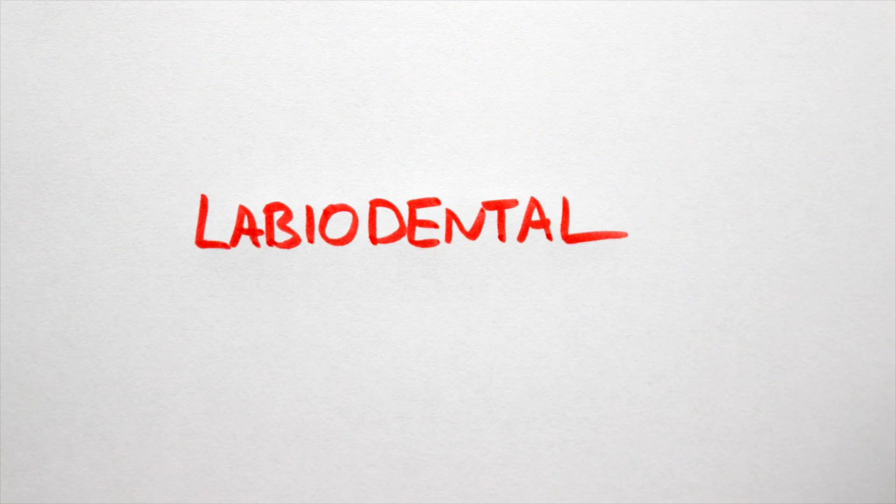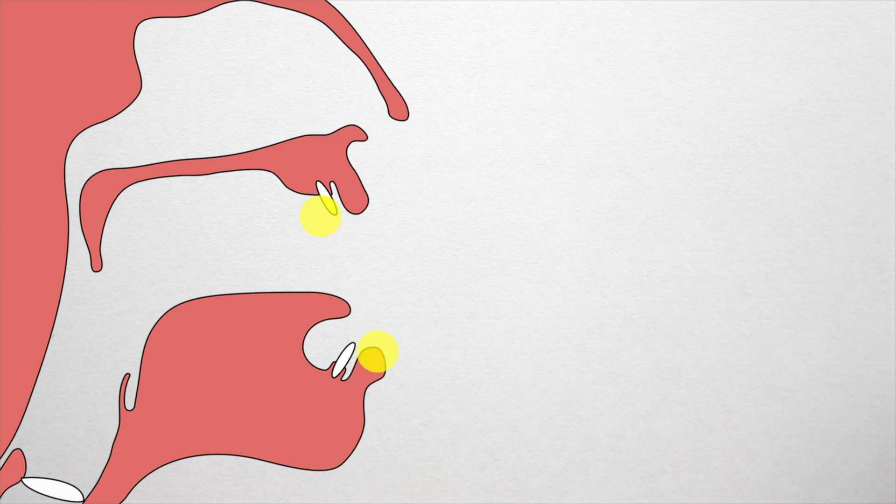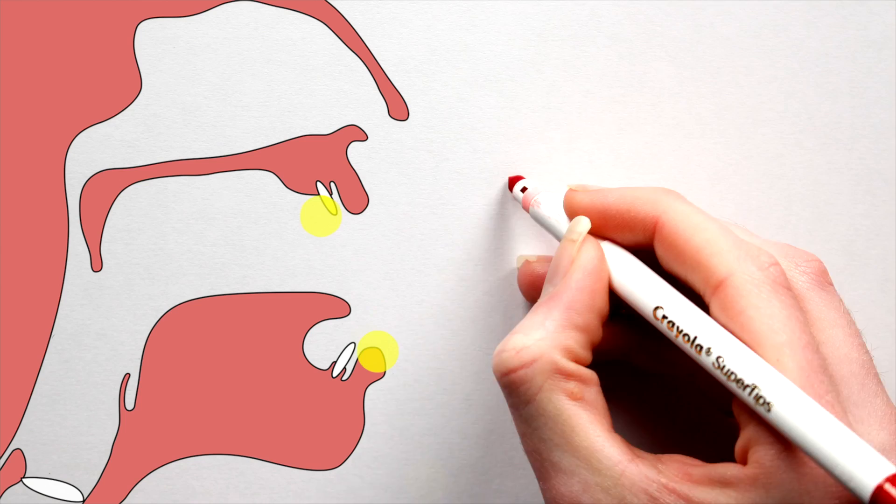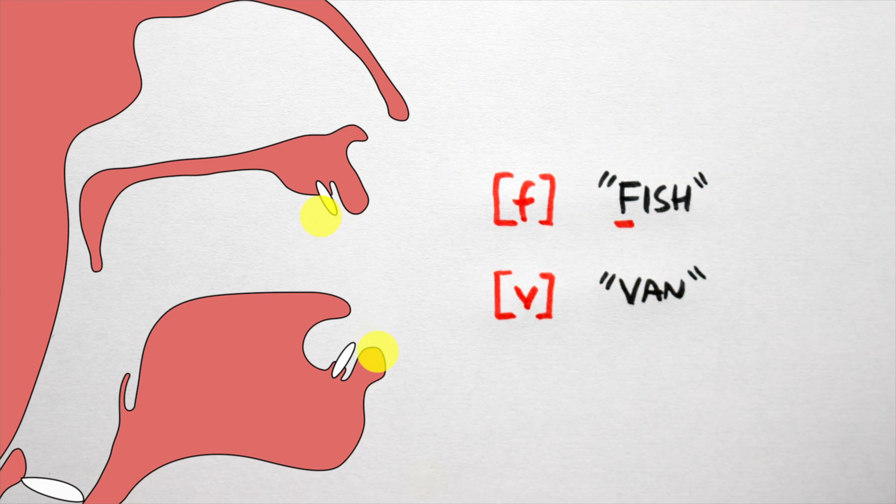Two, labiodental. Here, the lower lip contacts the upper teeth to form sounds like fa as in fish, and va as in van.